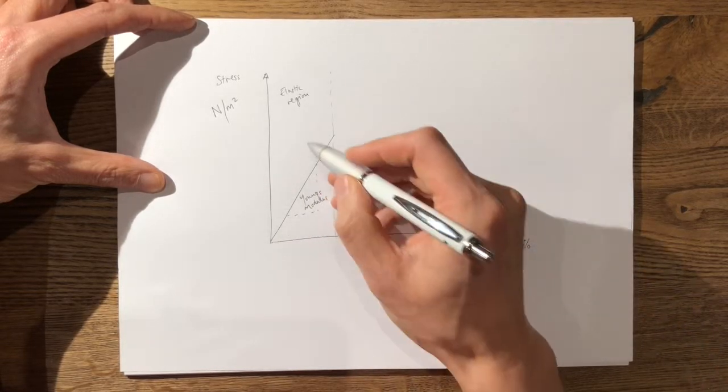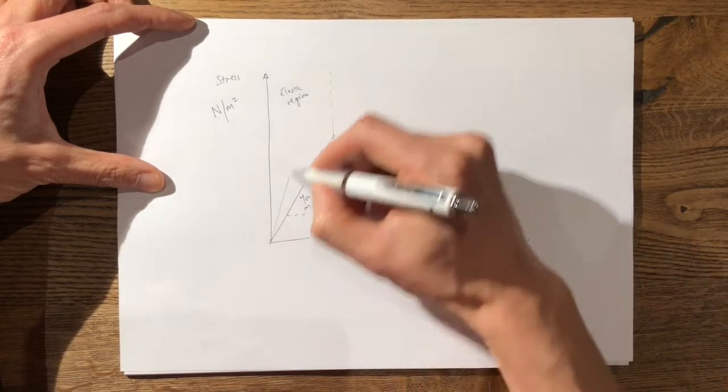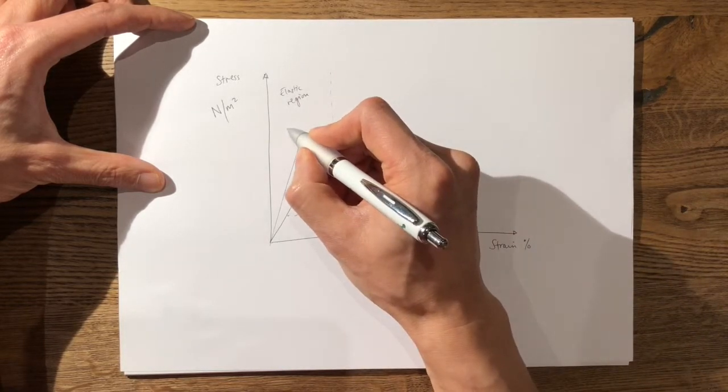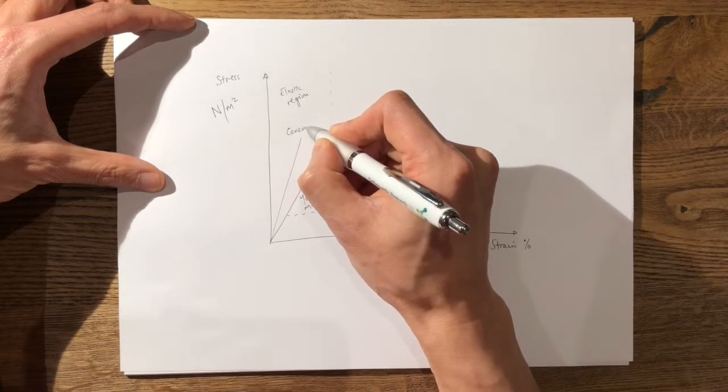The steeper the gradient or the higher the Young's modulus, the stiffer the material. An example of this is a ceramic.